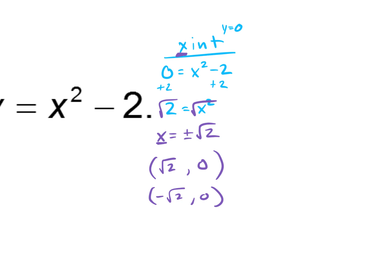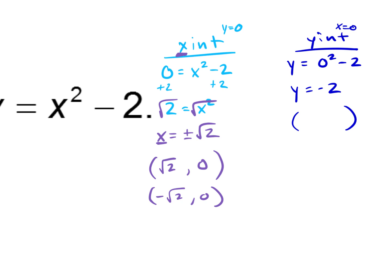Now let's find the y-intercept. Plug in 0 for x: y equals 0 squared minus 2, which is negative 2. So y equals negative 2. The y-intercept is written as the coordinate point (0, -2). Since y is negative 2, that goes in the y spot, and we plugged in 0 for x, so 0 goes in the x spot.